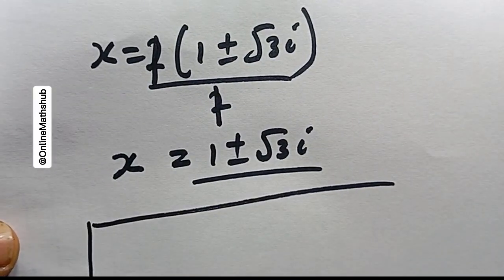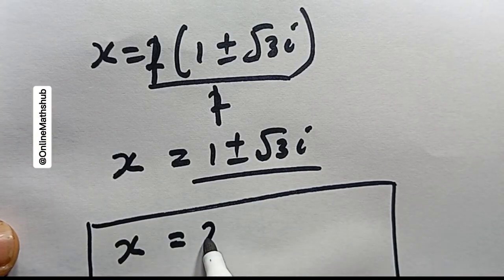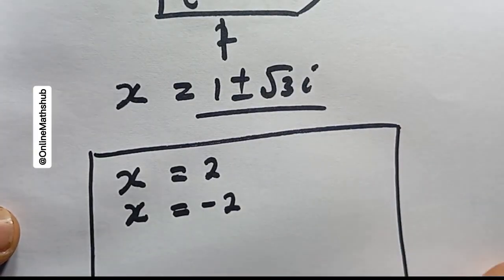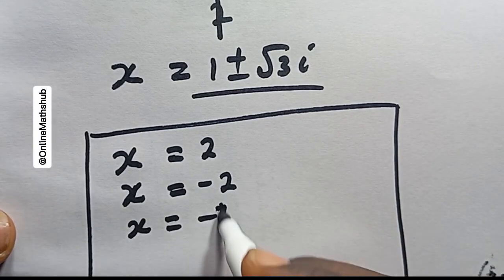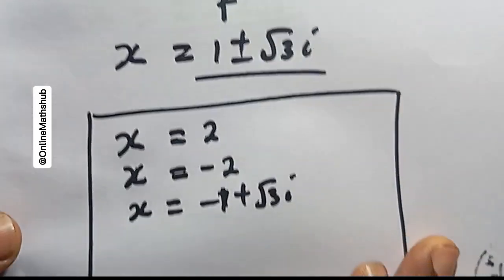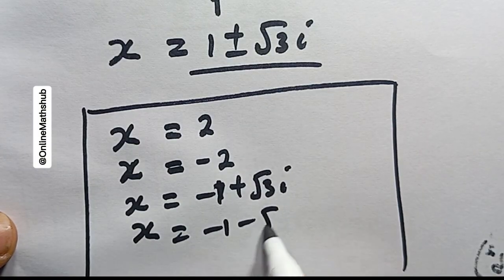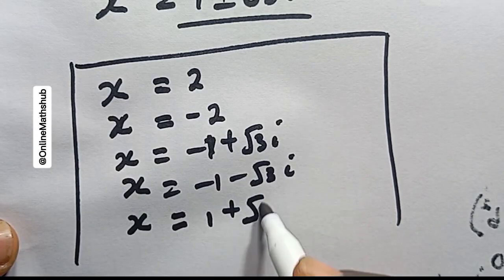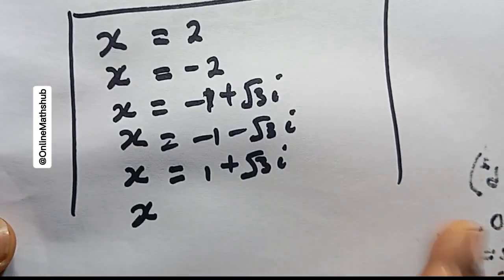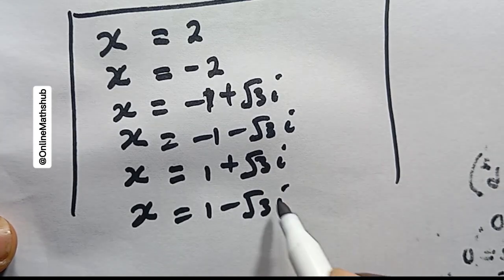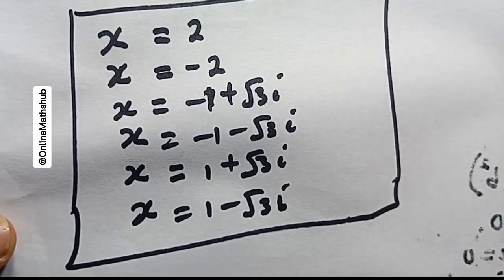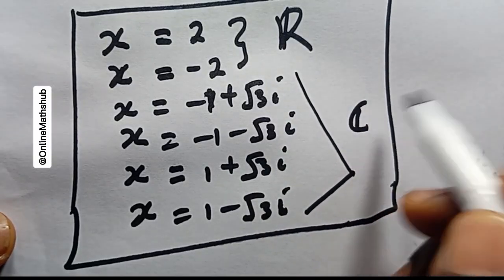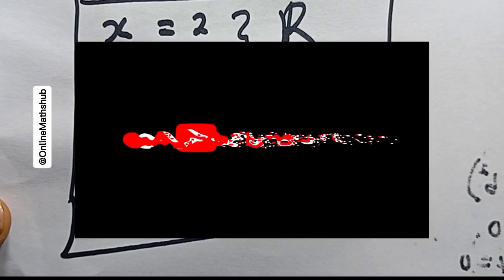Bringing everything together, the six values of x are: x equals 2, x equals negative 2, x equals minus 1 plus root 3 i, x equals minus 1 minus root 3 i, x equals 1 plus root 3 i, and x equals 1 minus root 3 i. The first two are real numbers, and the remaining four are complex values.